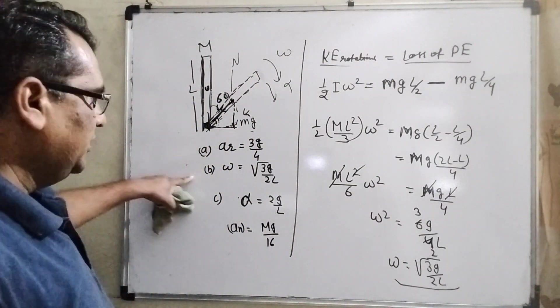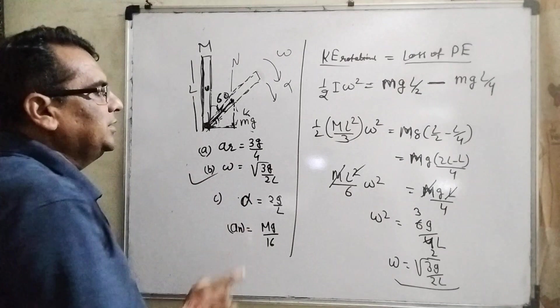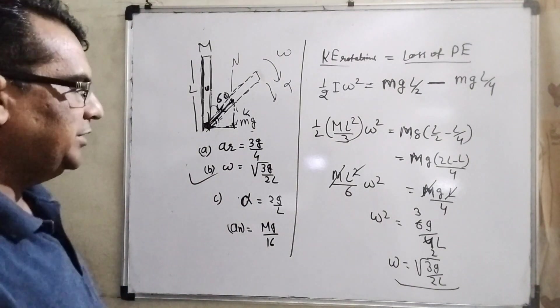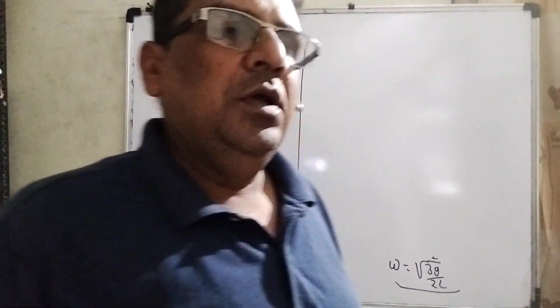Then 4 by 2 is 2, 6 by 3 is 2. Then omega can be written as root 3g by 2L. Let us see which option is correct and matches. You can see that second option, yes, B is correct. Omega equal to root 3g by 2L.